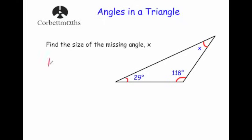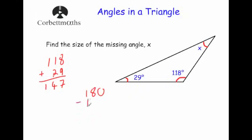So let's add these two angles together: 118 plus 29. We get 8 plus 9 is 17, carry the 1. 1 plus 2 plus 1 is 4, so we get 147 degrees. Now we're going to take that away from 180 to see what's left for X. 180 subtract 147 gives us 33. So X is equal to 33 degrees.